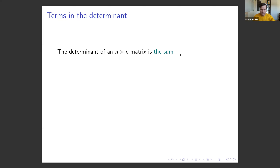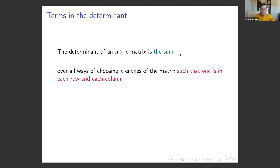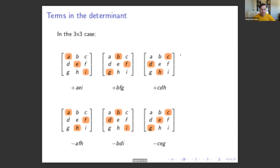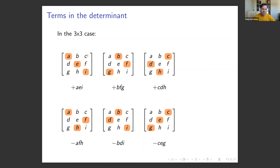For a matrix of arbitrary size, we can proceed by induction. The determinant of an n by n matrix is the sum over all ways of choosing n entries of the matrix such that one is in each row and each column, of the product of those entries. For example, a is the element from row 1 column 1, e is from row 2 column 2, and i is from row 3 column 3. If you choose them in a different order — say g is row 3 column 1, b is row 1 column 2 — certain sign conventions apply.